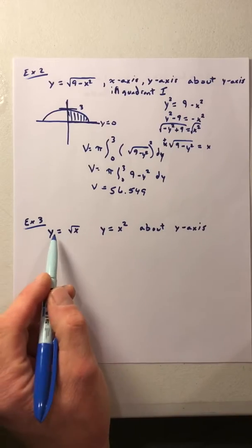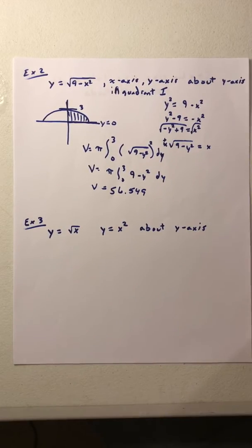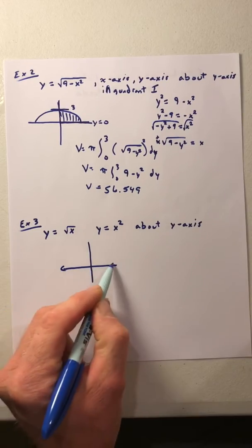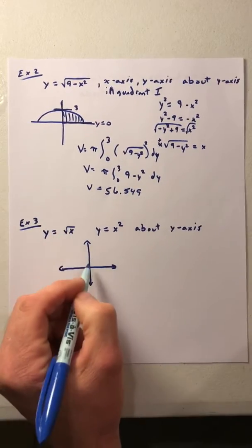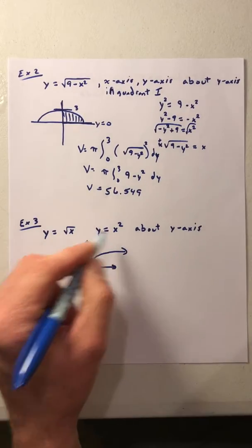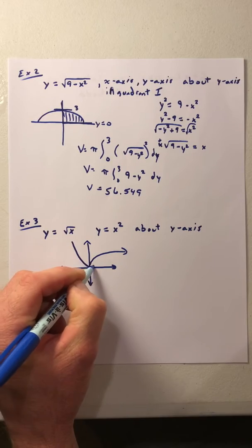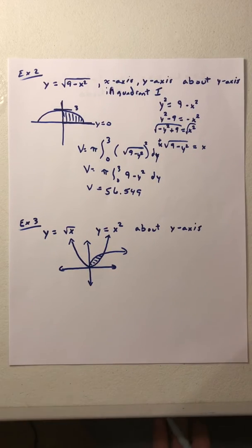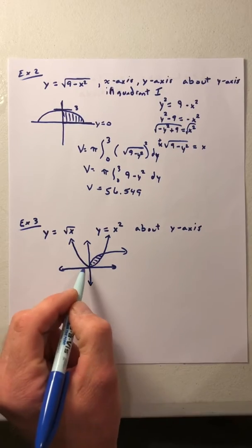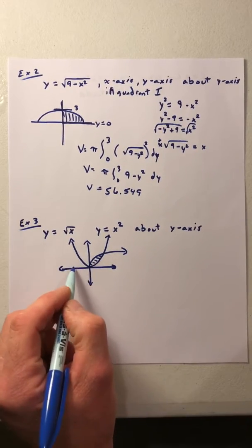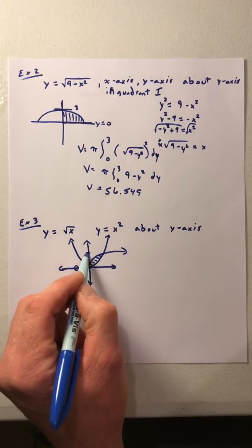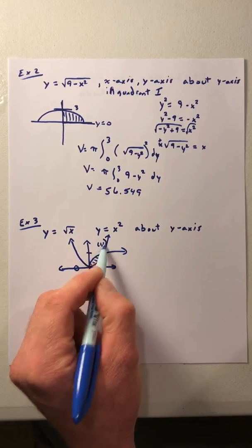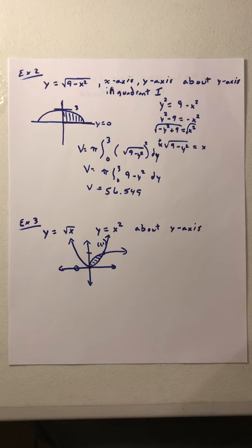In example three, we have y = √x and y = x², revolved about the y-axis. Graphing √x looks like that, and x² comes in and goes back out. The figure we're looking at is the region between them. The information I need: we're going around the y-axis, the lower bound is 0, and the point of intersection of the two curves is at (1, 1), which we could confirm with a calculator.